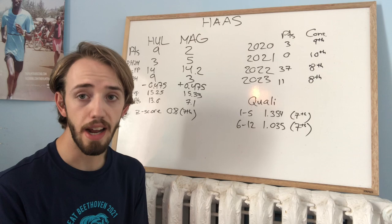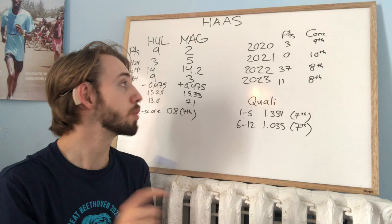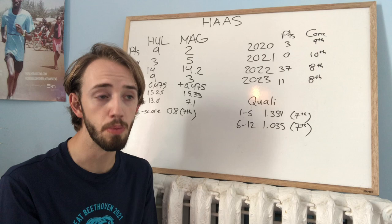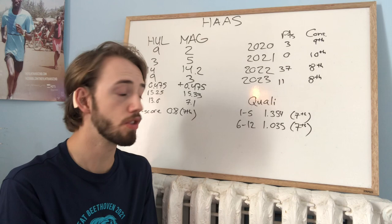Now, taking a look at how Haas is doing this year relative to past years, 2020, 3 points, 9th in the Constructors. They were hurt really badly by Ferrari's engine in 2020. 2021, the absolutely rock-bottom year. Their two drivers were Schumacher and Mazepin. They were hurt pretty badly financially by the pandemic and were forced to take basically a paid driver and a Ferrari junior. 0 points, 10th in the Constructors. It was an awful year.